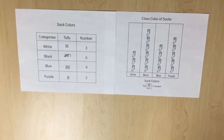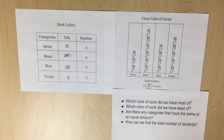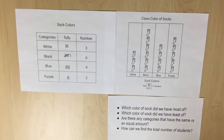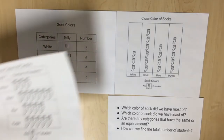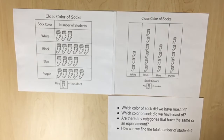Each symbol should represent one piece of data. After the pictograph has been created, guide the class in a discussion using questions such as: which color of sock did we have the most of, which color had the least, are there any categories with the same or equal amount, and how can we find the total number of students? Explain to students that pictographs can be vertical or horizontal. Model how to represent the same survey data in another pictograph with the categories on the side, and discuss what is similar and different about the two pictographs.